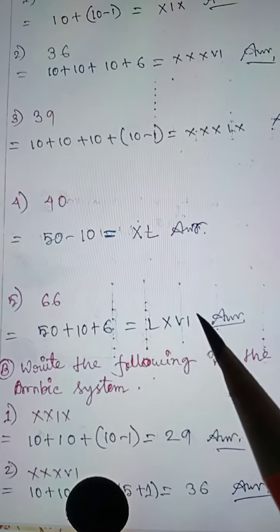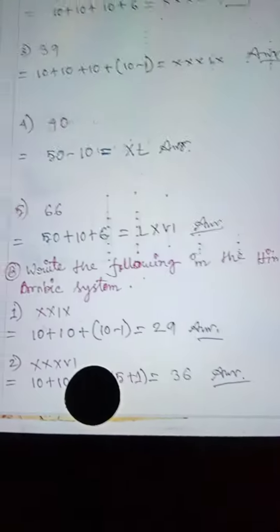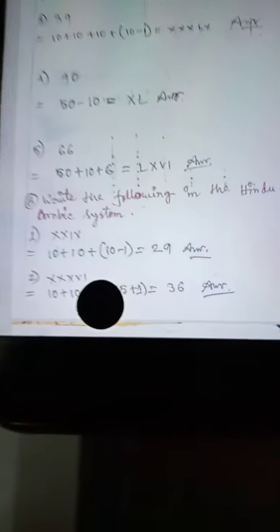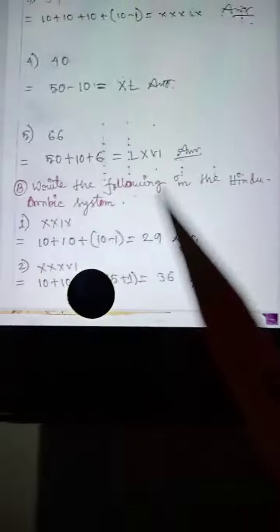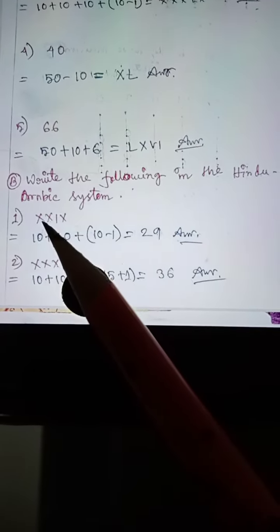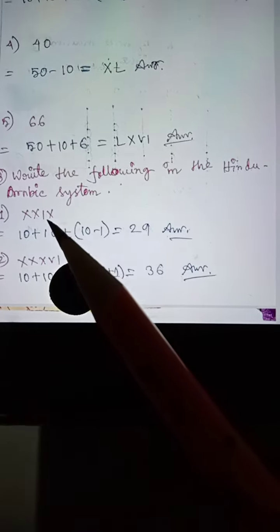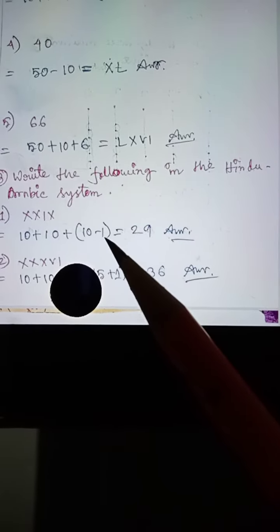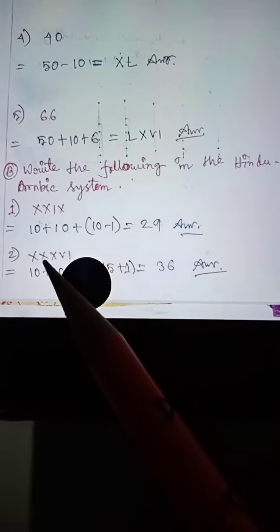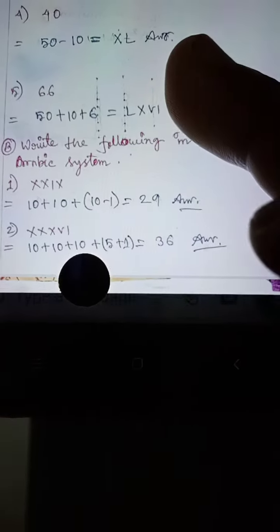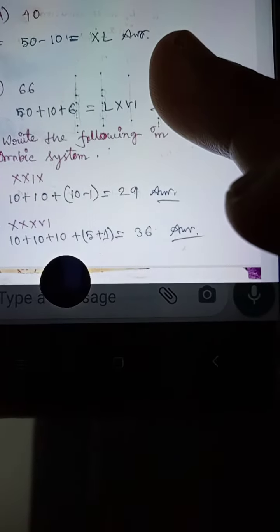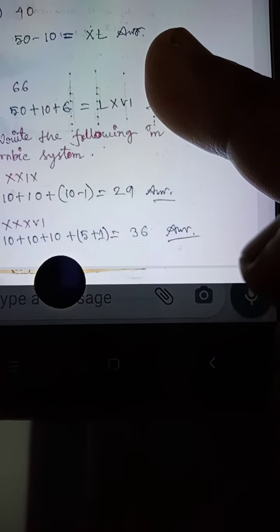Now write the following in the Hindu-Arabic system. Problem 1: 10 plus 10 plus 10 plus 9 (which is 10 minus 1) equals 29. Next problem: 10 plus 10 plus 10 plus 6 (which is 5 plus 1) equals 36. Like this you have to do.